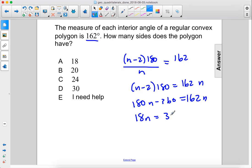That gives us 18n equals 360. Divide both sides by 18 and we get n equals 20. The answer is B.